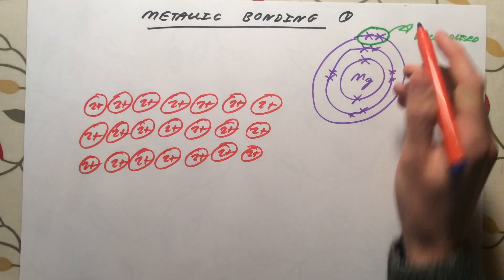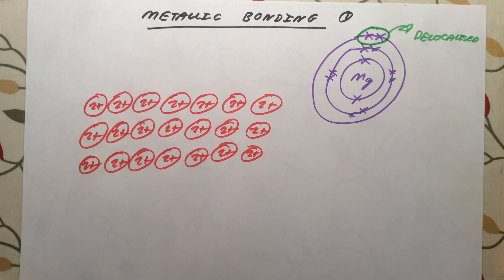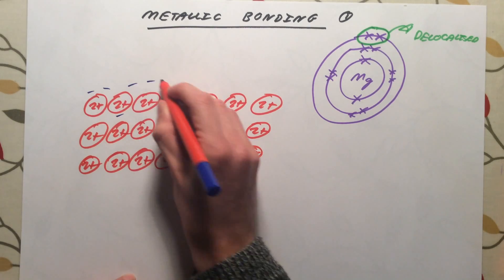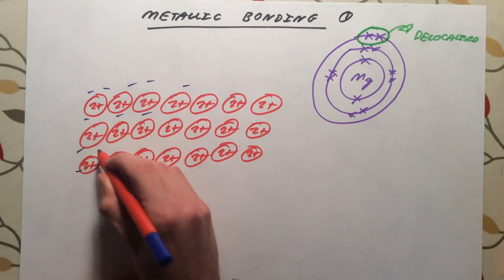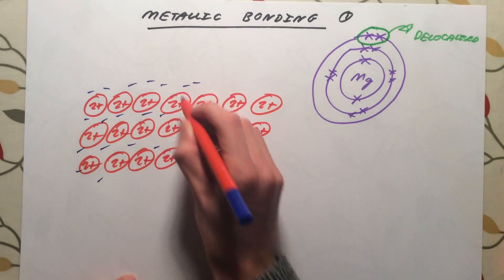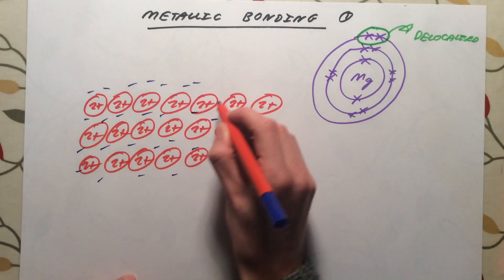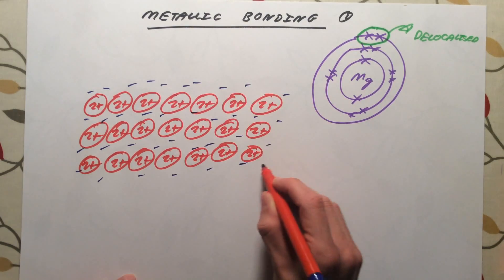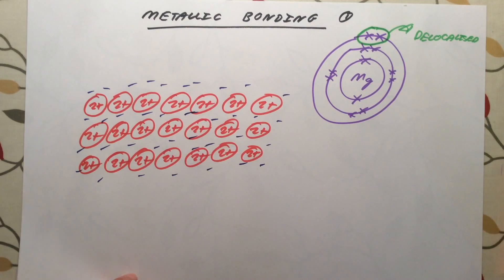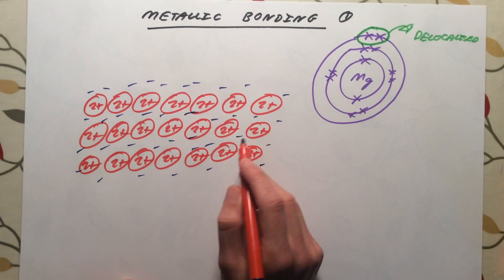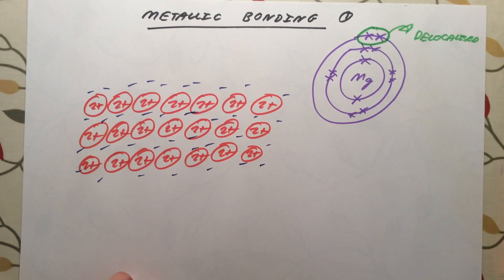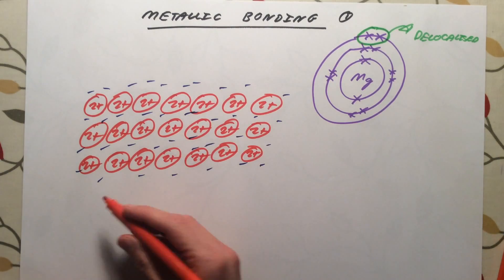However, the electrons that have been given out are free to move wherever they want through the structure. Every magnesium atom will have given out two electrons, which are able to flow wherever they want through the structure. I'm just representing my electrons here as little negative symbols. These electrons can move wherever they want. This electron could whiz around here, this electron could whiz up here if it wanted. They are free to move.